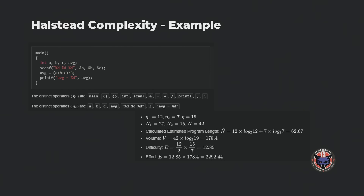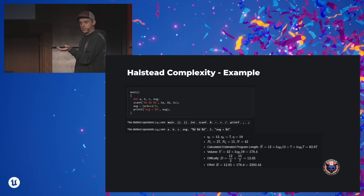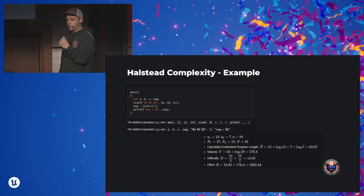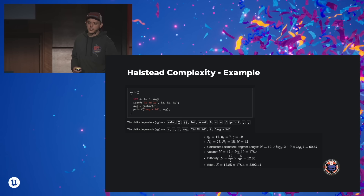Quick example from Wikipedia: a stereotypical C or C++ example. You have a couple of variables, read from the command line, average them, and print them out. What are the operators? Your main function, the syntactic sugar like curly braces, the actual functions, and so on. The operands would be the variable names, the text fed to the functions, the number three — these are operands. You plug this into the semi-magical formula and you get a volume of 178, a difficulty of 12, and an effort of 2,000. Lower difficulty, semi-low volume — it can already show you this is not a difficult-to-maintain program.